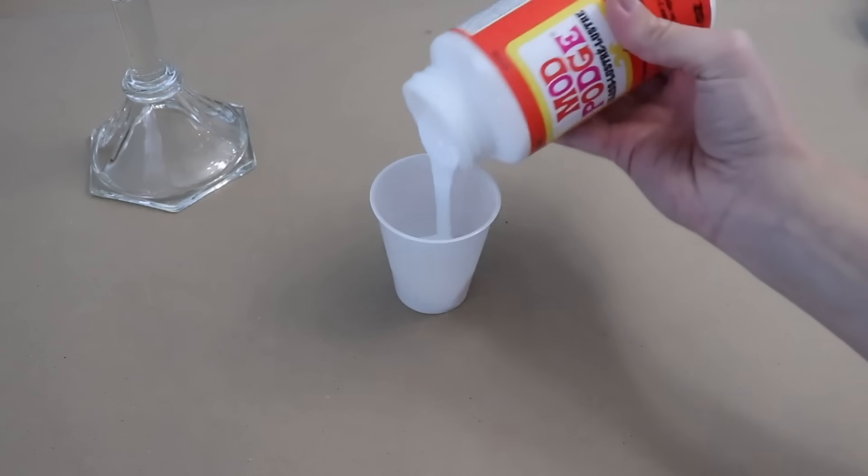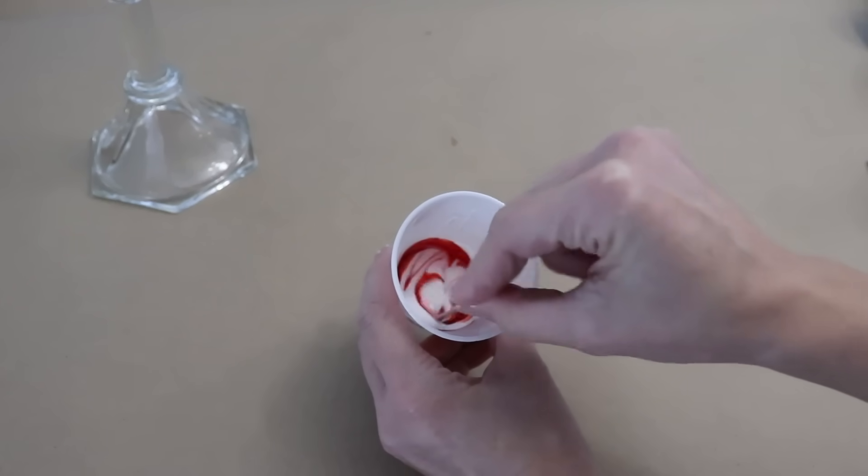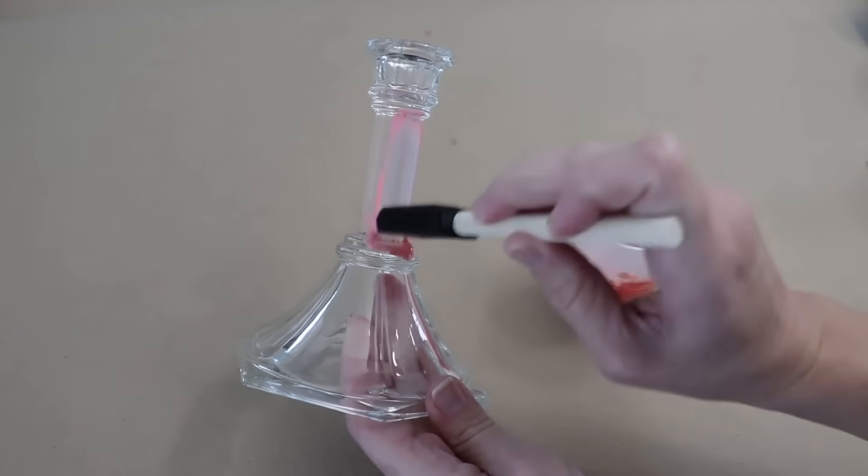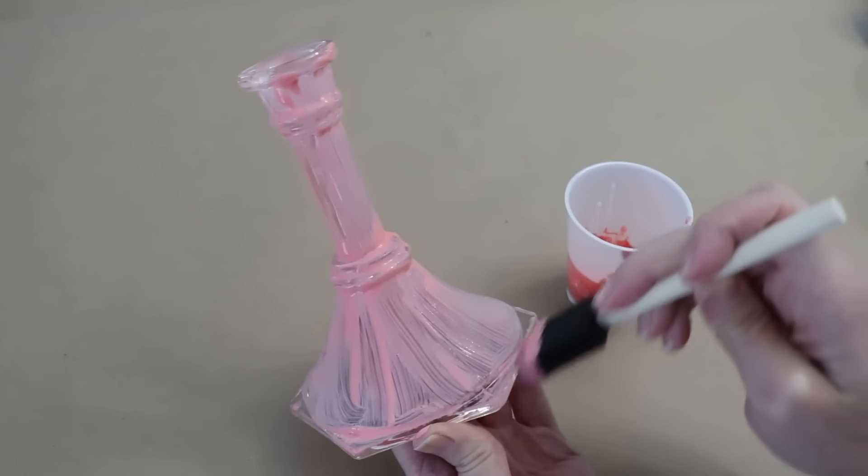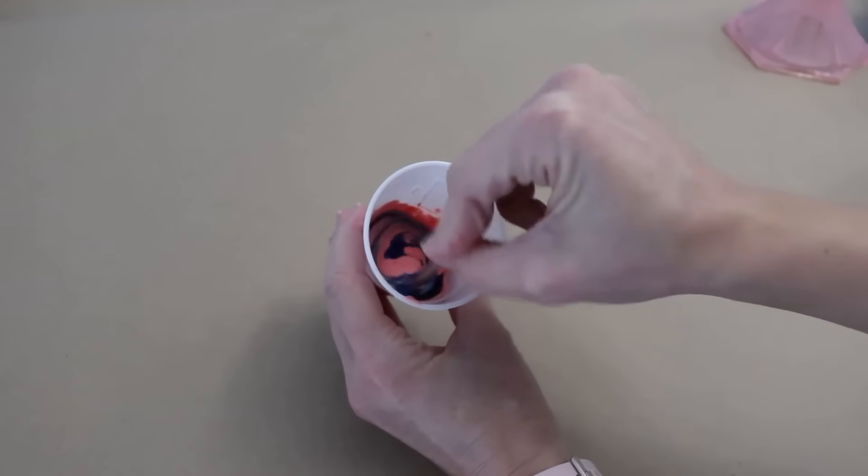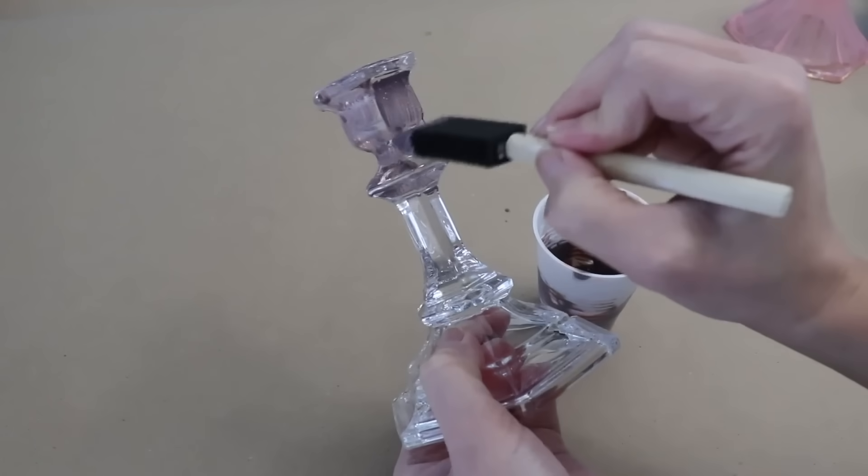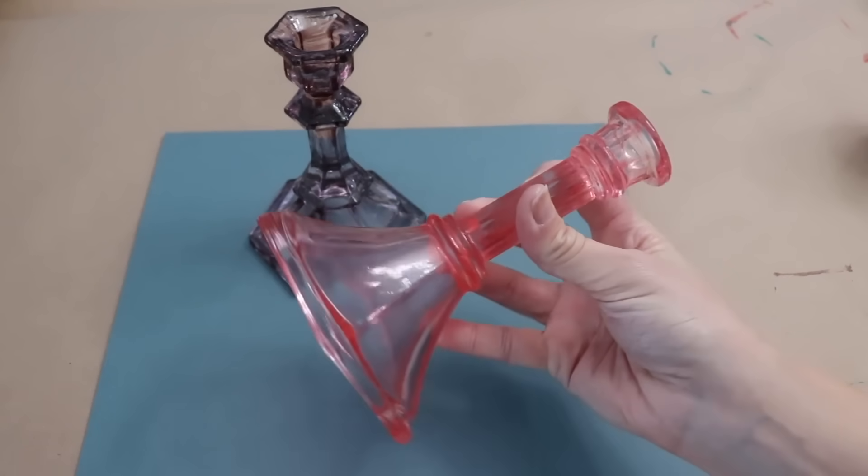Grab a candlestick, grab yourself a little container and pour in some Mod Podge. Then you're going to add a few drops of food coloring and just apply a coat over the entire outside of the candlestick. Now I'm going to add a little bit of blue and then make another candlestick. My glass is covered. Just set these aside for an hour or two.